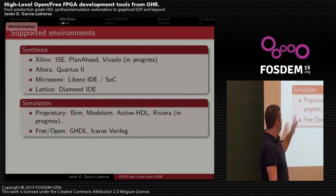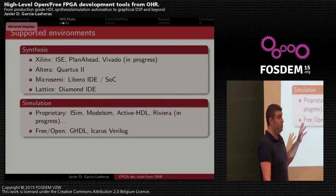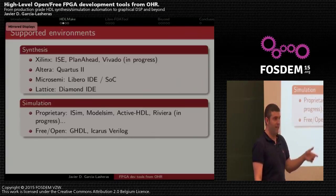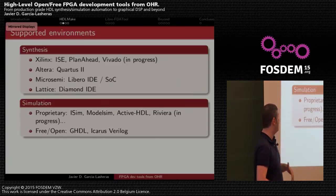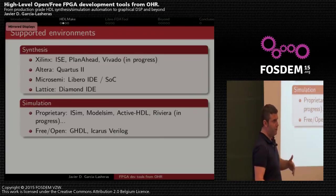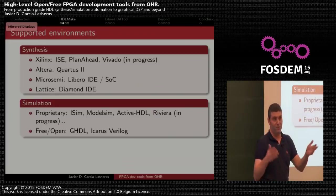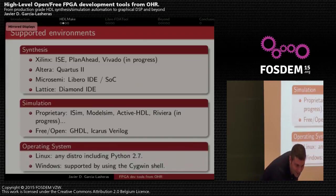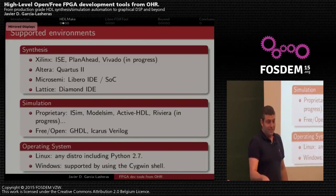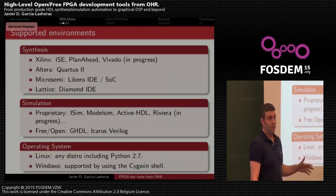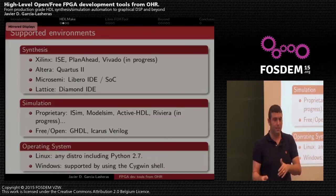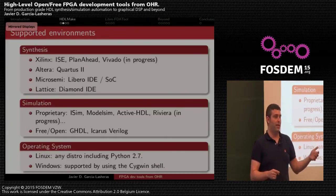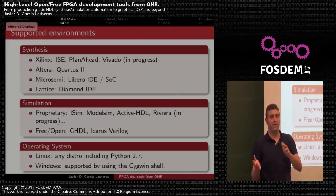For simulation it supports both proprietary tools such as iSim, ModelSim, and ActiveHDL, with more work in progress, and it also supports free open tools such as GHDL. Regarding operating systems, it can run on any Linux distribution that has Python 2.7, and it can also be used on any Windows distribution by using Cygwin.